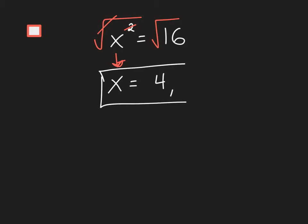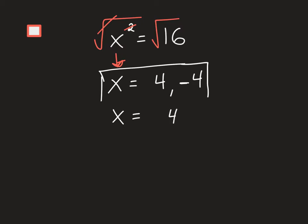There's another solution as well. 4 times 4 is 16, but what about negative 4? Negative 4 times negative 4 is a positive 16. So there are actually two solutions. Instead of writing x equals 4 and x equals negative 4 separately, we can combine them and write x equals plus or minus 4.